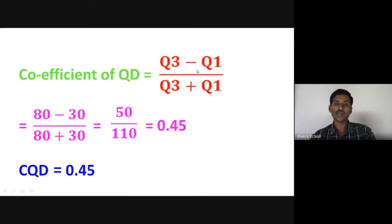To summarize, remember these formulas. Q1 formula is N plus 1 by 4th item. Q3 formula is 3N plus 1 by 4th item. Quartile Deviation is Q3 minus Q1 divided by 2. And finally, the formula for coefficient of quartile deviation is Q3 minus Q1 divided by Q3 plus Q1.